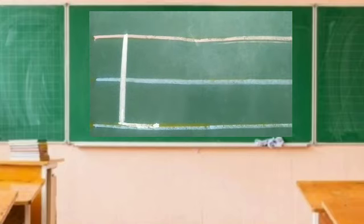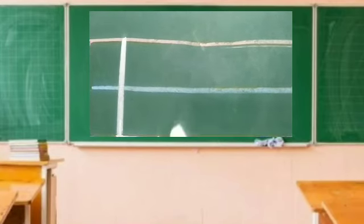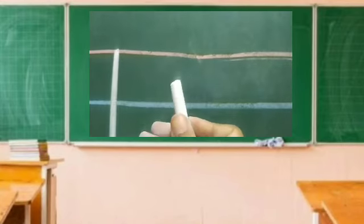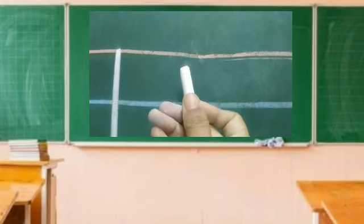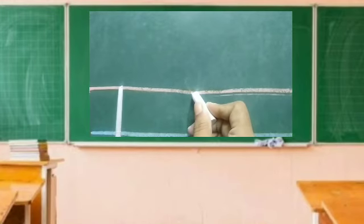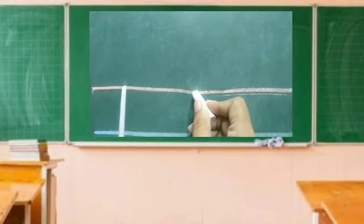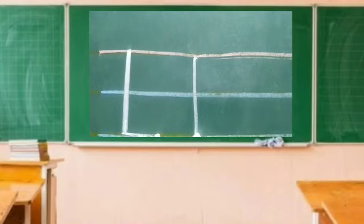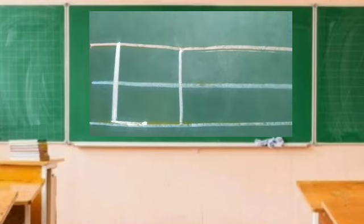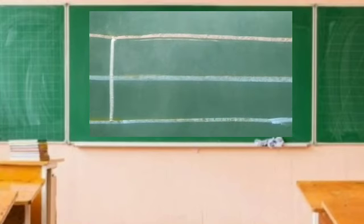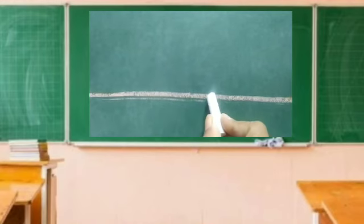How do we write small letter L? We begin small letter L from the red line. So children, place your pencil here and just make a standing line down to the blue line. This is L. We begin from the red line.